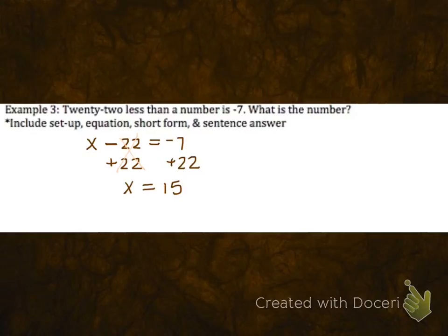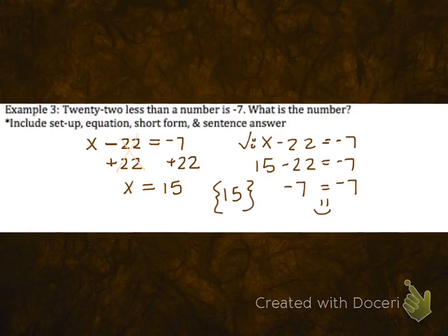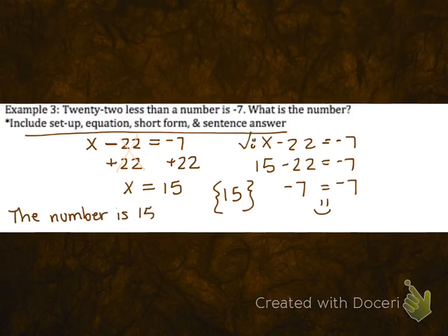Again, always thinking through that you want to do a check. So if you take your original and plug in your hopeful solution and do the arithmetic on each side, we see we get a match, and then we can indicate that our solution is 15. Now because this is a word problem, we also want to make sure we're giving a word answer. So we can just say the number is 15. So if you're given a word problem, again, giving a solution in sentence form.